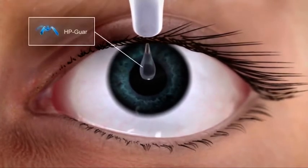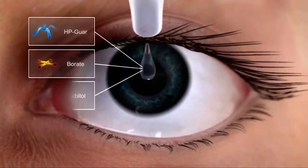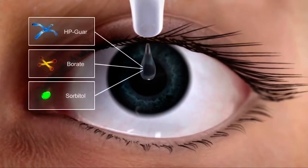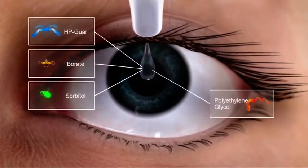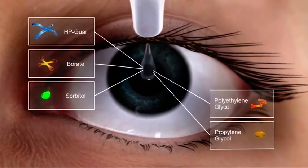...consisting of HP-GUAR, borate and sorbitol, enables the ingredients, polyethylene glycol and propylene glycol, to lubricate and provide protection.